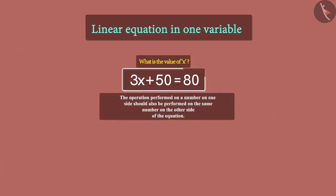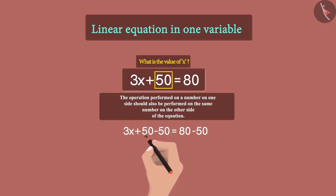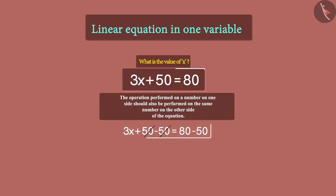Now let's solve this equation. First, we can see it's easy to remove 50 from here. So, we subtract 50 from both sides. Now the equation becomes: 3 times x is equal to 30.